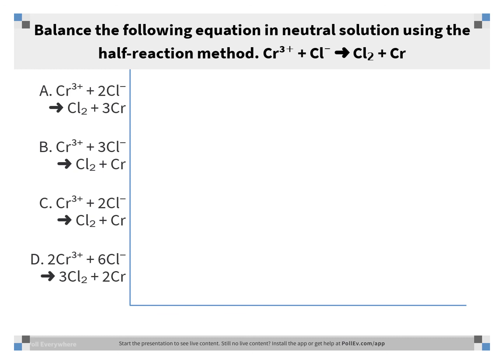D is the only one where both the masses and the charges balance. We've got 2 chromiums on the left and 2 chromiums on the right, 6 chlorines on the left and 6 chlorines on the right, a total of zero charge on the left and a total of zero charge on the right.